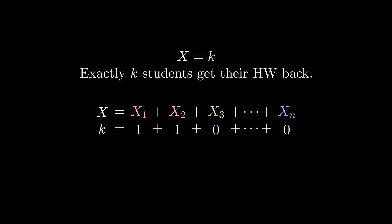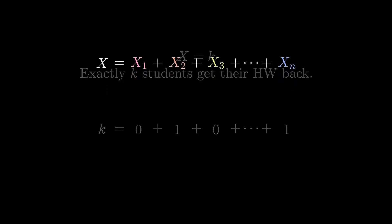For the k students who got their homework back, X sub that student is 1. But for the students who don't get their homework back, their random variables all contribute 0 to the sum.